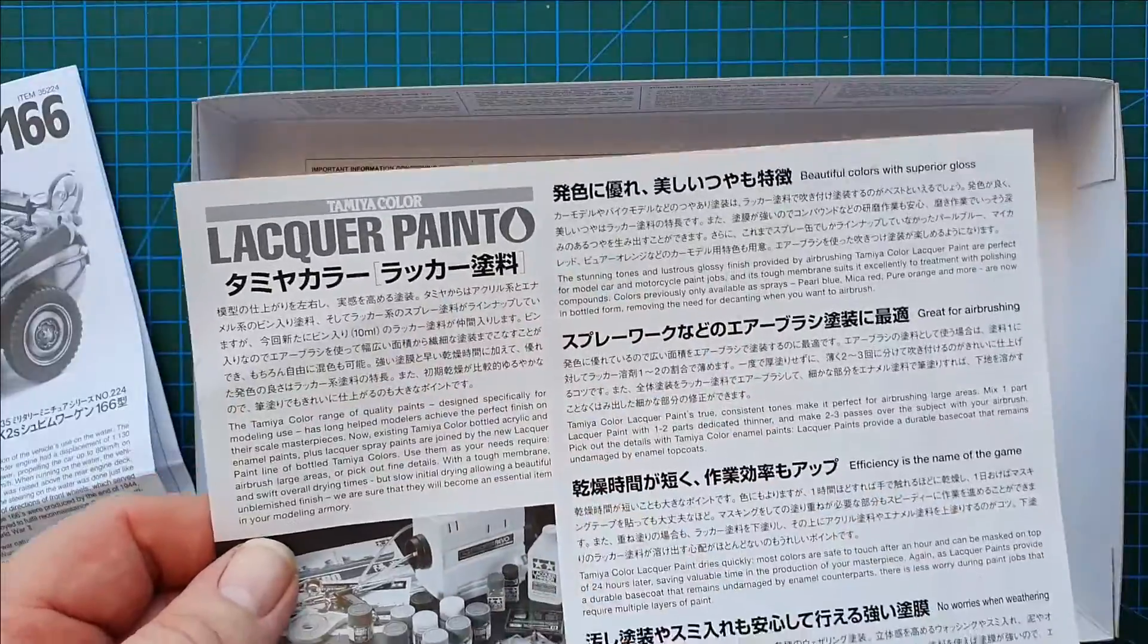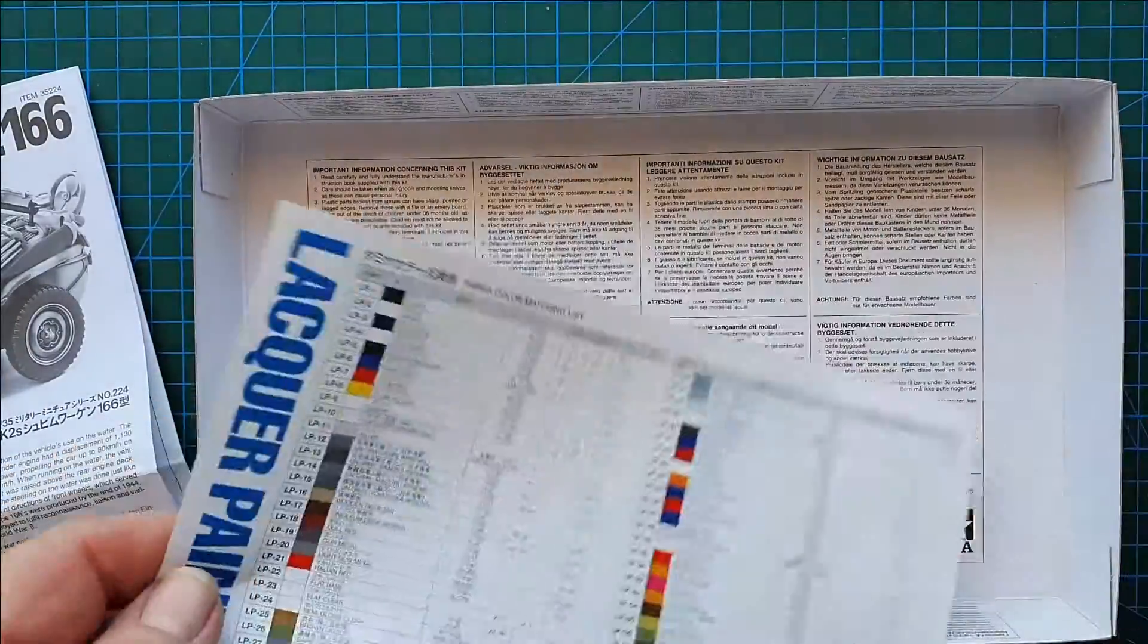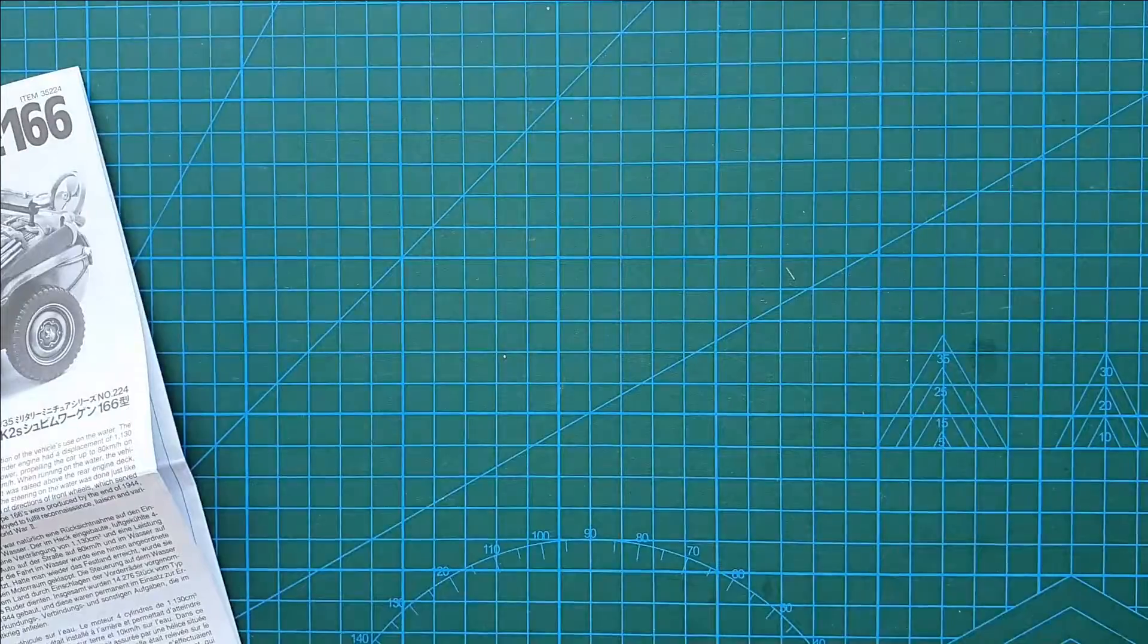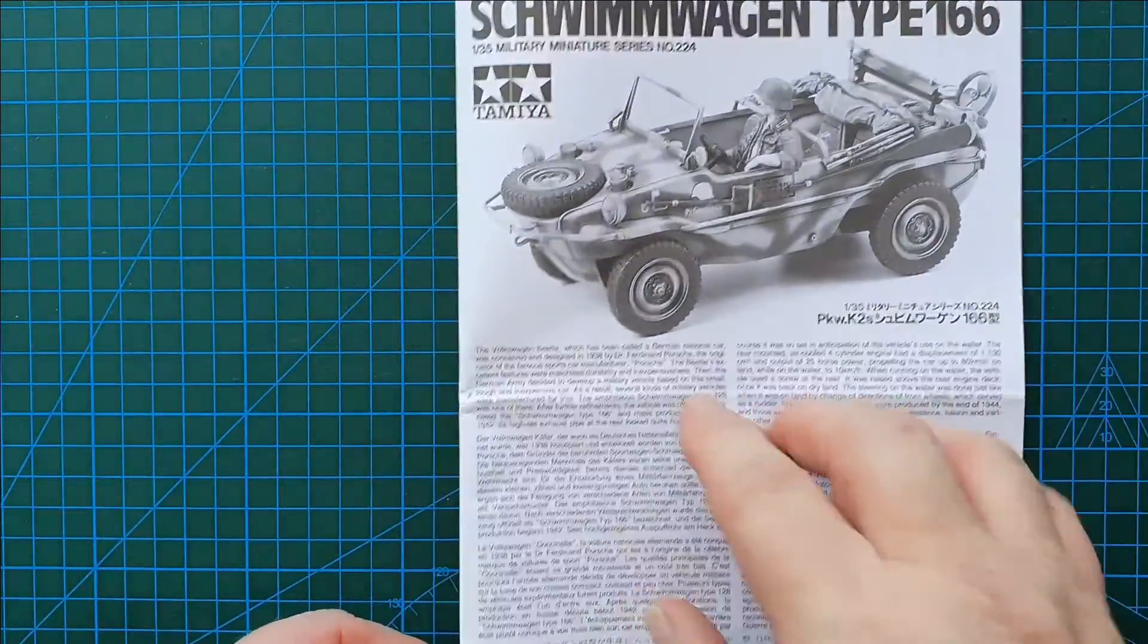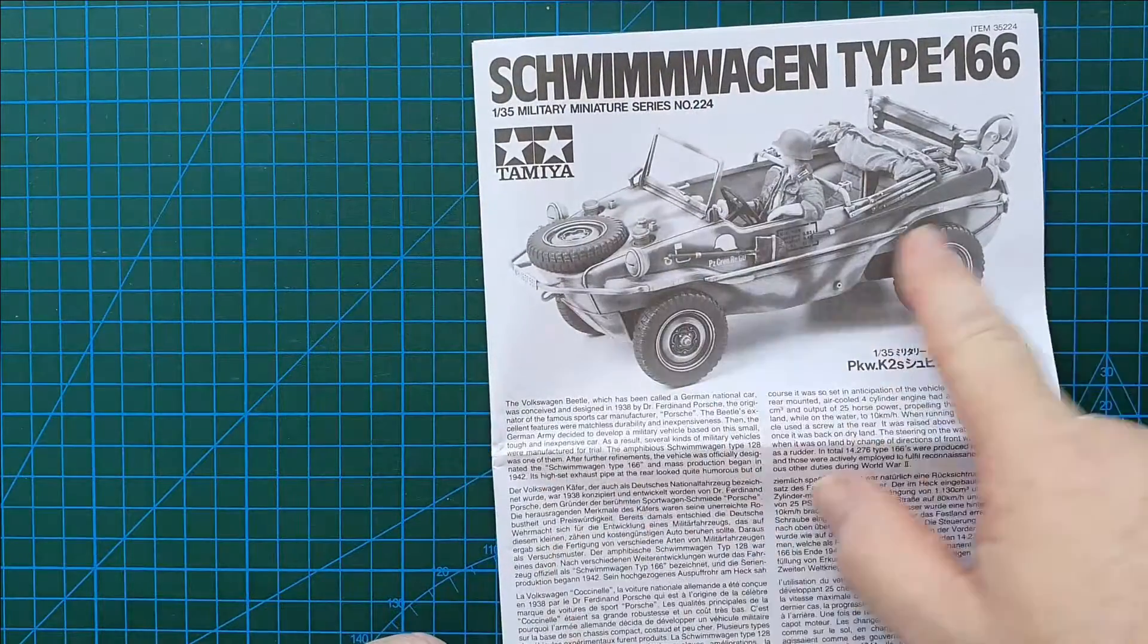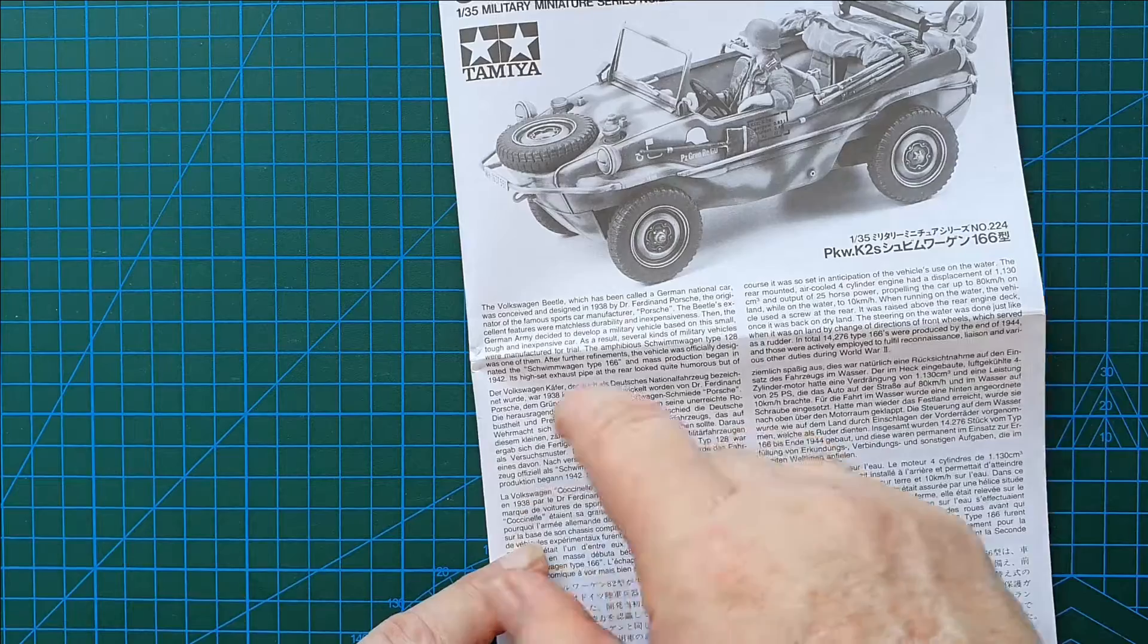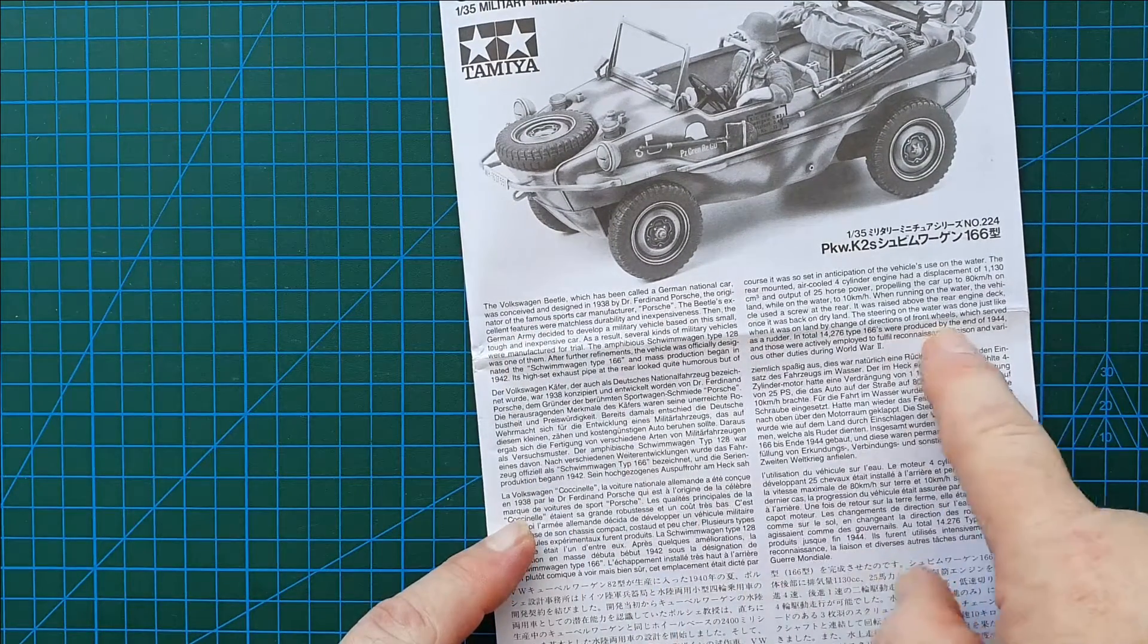Two bags of sprues, not much else. This is advertising for Tamiya's paints and does actually have a lacquer paint chart on the back. And that's all there is. So let's have a look at the instructions. As you can tell that is actually a photo of the model itself and you've got Japanese, French, German, English, history of the vehicle with some basic specifications.